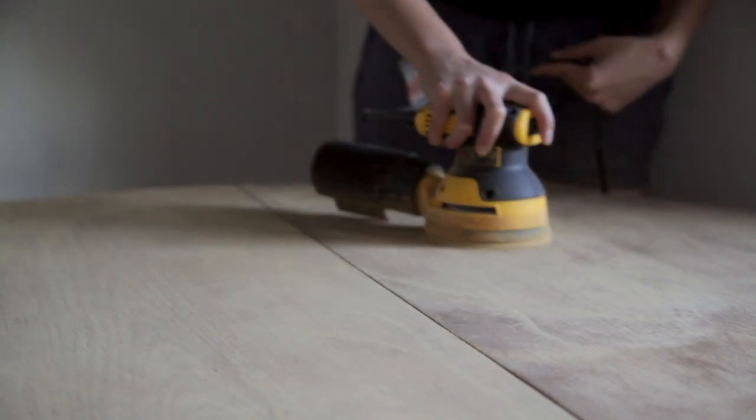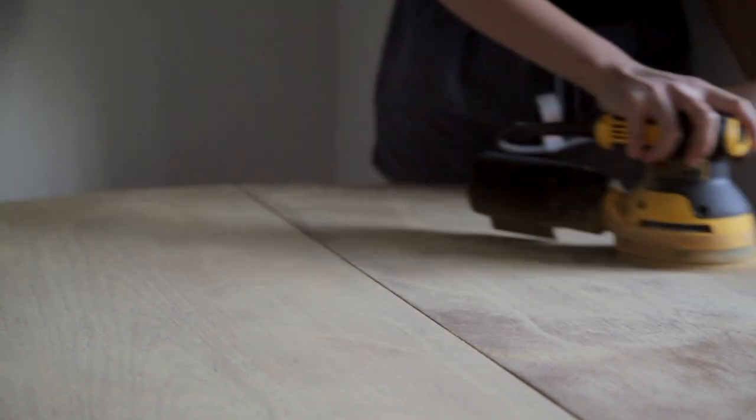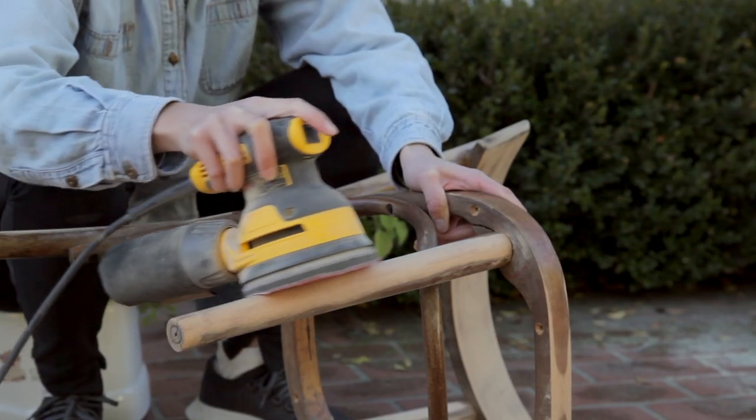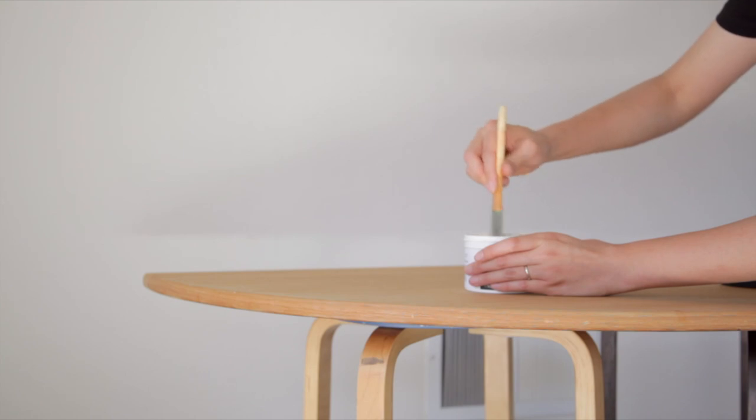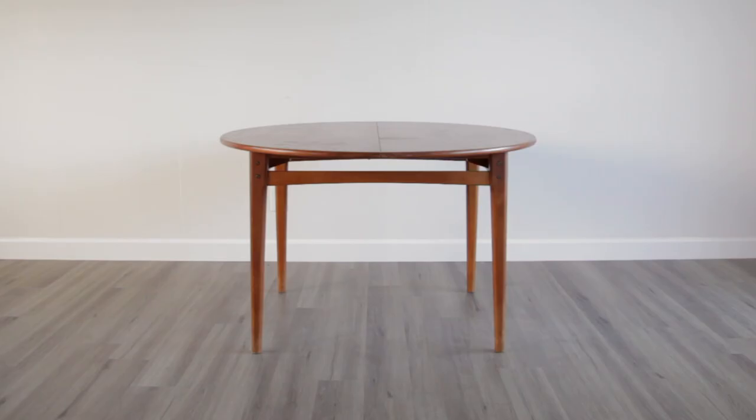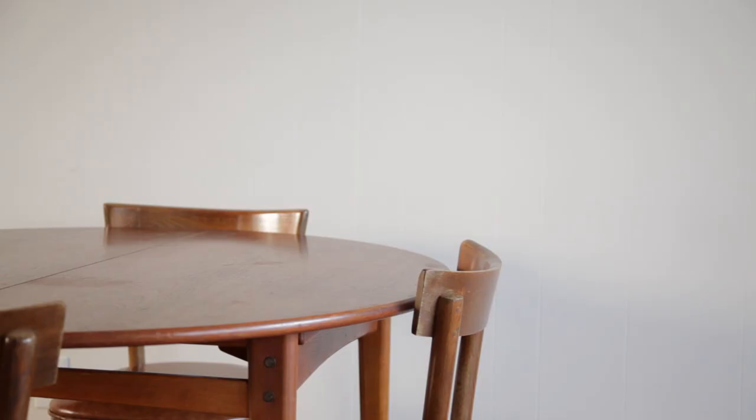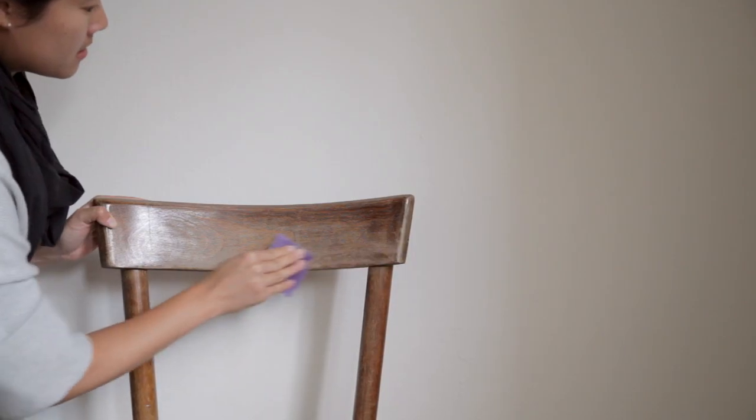It's a bit surreal to be making this video, but after three years of sanding, sanding some more, sanding and treating, I finally completed the refinishing of these mid-century dining chairs and table. When I first started this project we just moved into this current apartment. I still had short hair and a lot has changed.